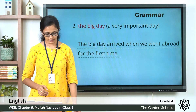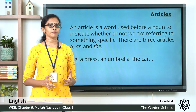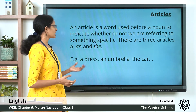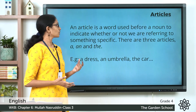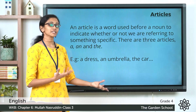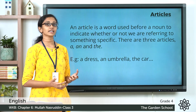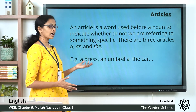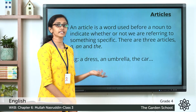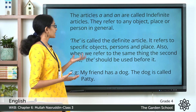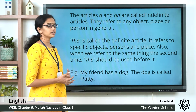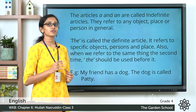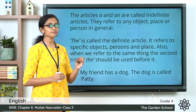Now let's move on to the next section: fill in the blanks with suitable articles. Remember we learned about articles. An article is a word used before a noun to indicate whether or not we are referring to something specific. There are three articles: a, an, and the. The articles a and an are called indefinite articles because they can refer to any object, any place, or any person in general.